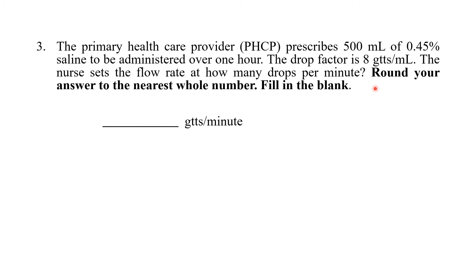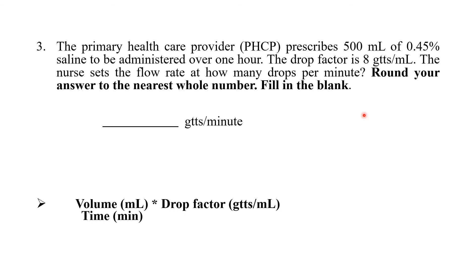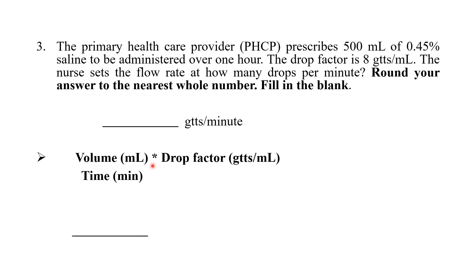For drops per minute, we need the formula. The formula for drops per minute is: volume divided by time, multiplied by drop factor. Volume must be in ml, time must be in minutes, and drop factor is in gtts per ml. Keep this formula in mind.